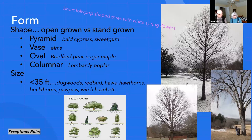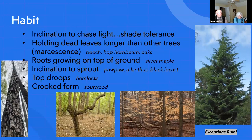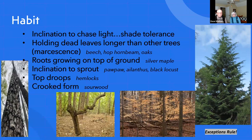The next characteristic is habit — not habitat. It's an inclination to chase light. The trunk and limbs' main function is to get the leaves into the light to produce sugar. Some trees have different habits you can identify or pick out.